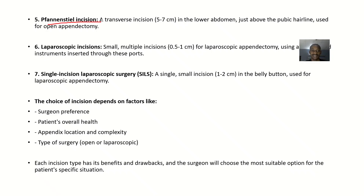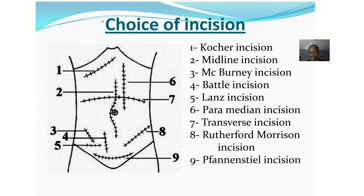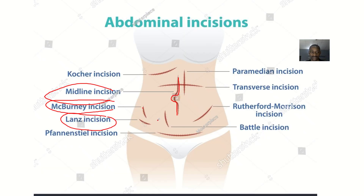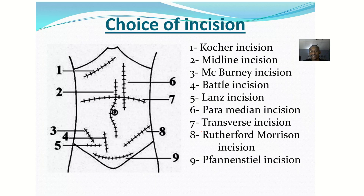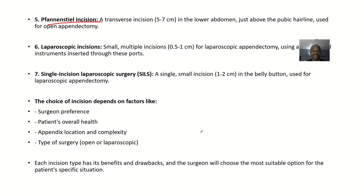Then we have the Pfannenstiel incision. This is a transverse incision about 5 to 7 centimeters long in the lower abdomen, done just above the pubic hairline. It is used for open appendectomy.